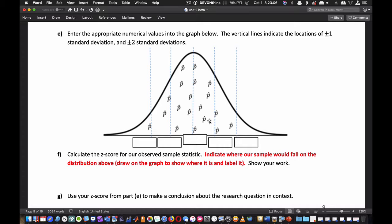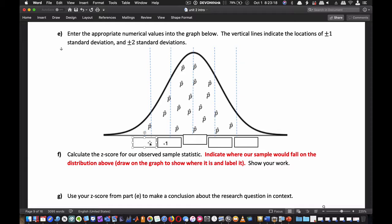Part E: Enter the appropriate numerical values in the graph below. The vertical lines indicate ±1 and ±2 standard deviations. This line is -1, this is -2, this is +1, and this is +2 standard deviations from the mean. At the center, the book wants you to put π or μ. In this case, put 0.6, or preferably (0, 0.6) as coordinates.